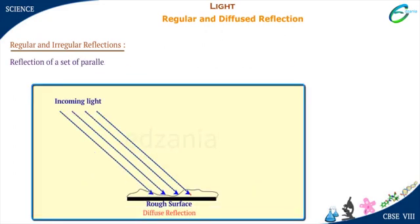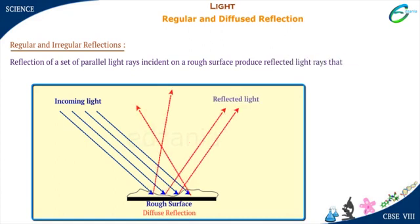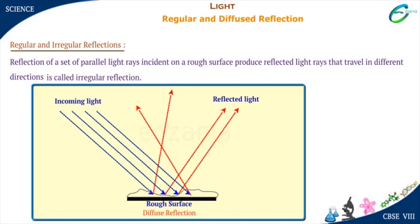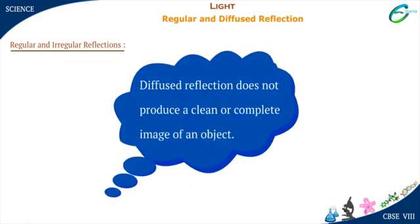Reflection of a set of parallel light rays incident on a rough surface produces reflected light rays that travel in different directions. Such type of reflection is called diffused or irregular reflection. Objects like plastic sheets, writing paper, wood have plain but not smooth surfaces. Since in diffused reflection, reflected rays travel in different directions, they do not produce a clean or complete image of an object.